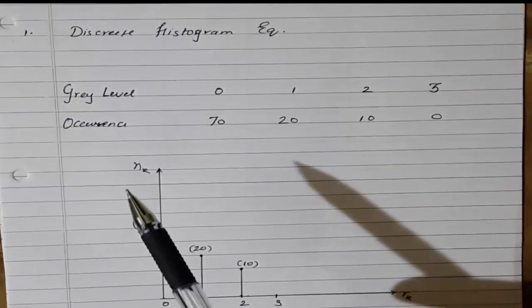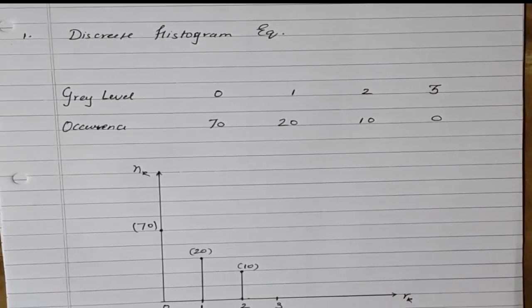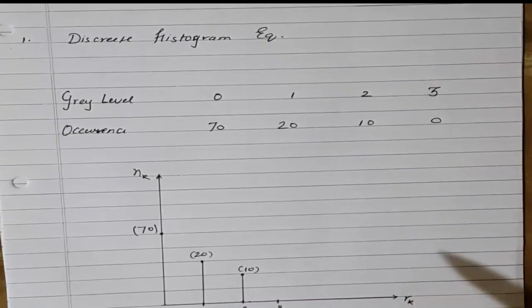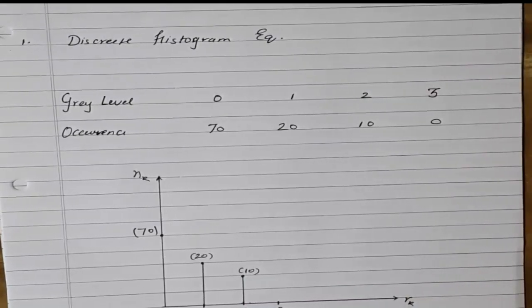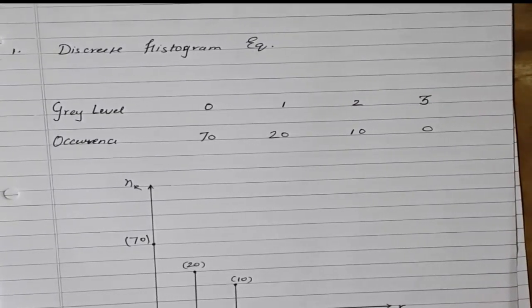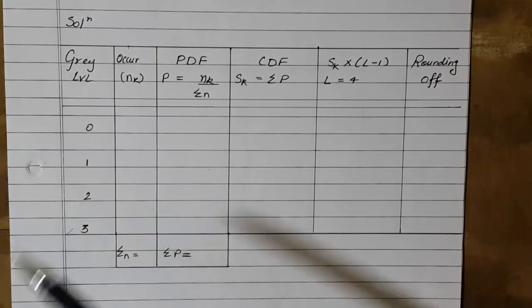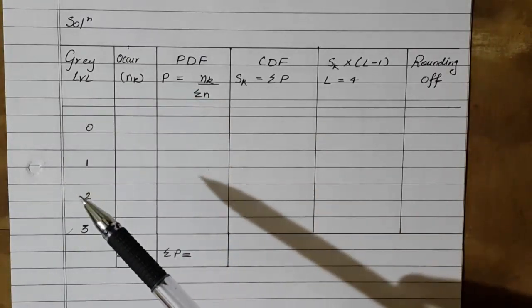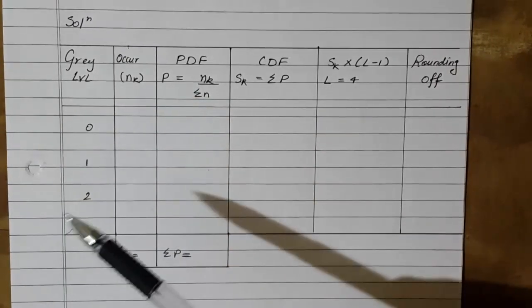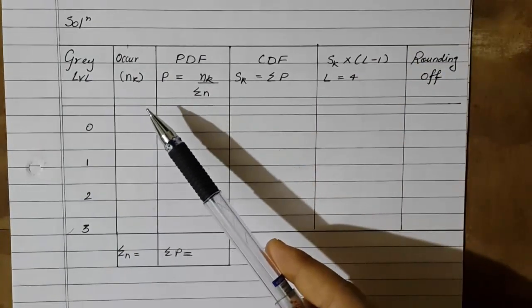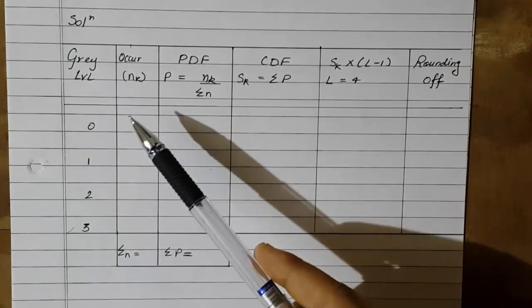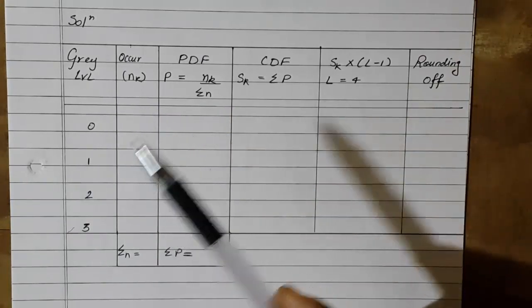Let us consider an example of gray levels from 0 to 3 and the occurrences as shown in this table. I have also drawn the histogram for this gray level distribution. Now let us proceed to perform the equalization. We have to construct a table like this: in the first column we enlist all the gray levels, and in the second column we write down the occurrences of each gray level for the entire image.